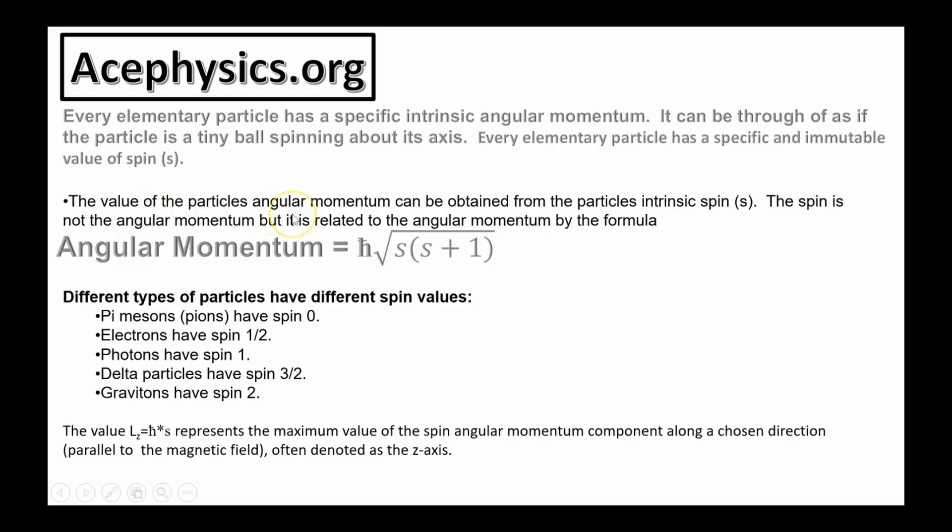The value of the particle's angular momentum can be obtained from the particle's intrinsic spin. The spin is not the angular momentum, but it's related to the angular momentum by this important formula. The angular momentum of a particle is equal to h-bar, this is Planck's constant, times the square root of s times s plus 1.